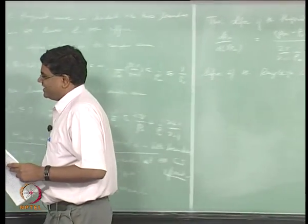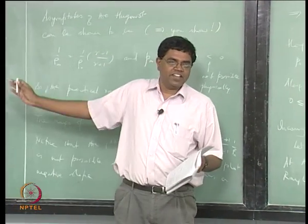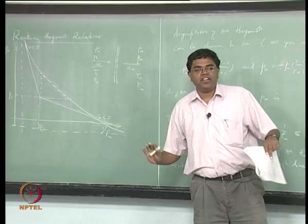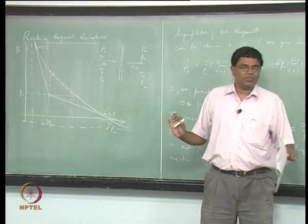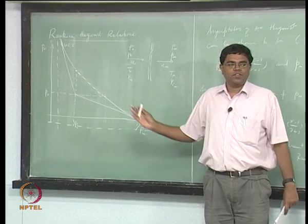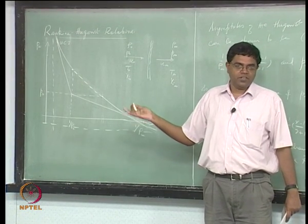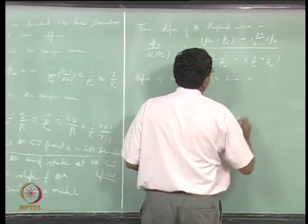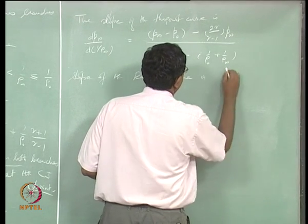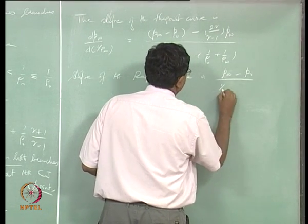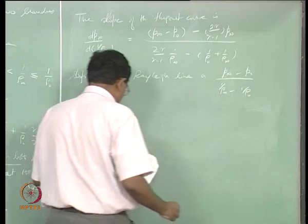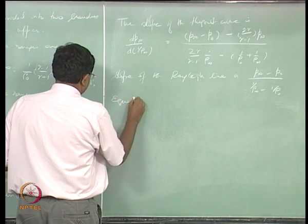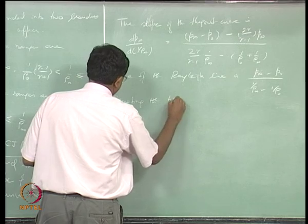At the CJ points, this slope equals the Rayleigh line slope. Since the Rayleigh line is straight, its slope is simply (p∞ − p₀)/(1/ρ∞ − 1/ρ₀). Equating the two slopes, we obtain an expression for p∞ in terms of p₀, ρ₀, and ρ∞.